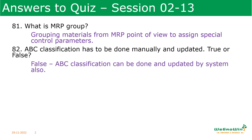What is ABC classification? ABC classification can be updated not only manually — it can be done by the system also. So ABC classification can be done by system as well. It is an inventory classification. There is a separate transaction to do this classification, which we will discuss later, but it is possible to update by system also.